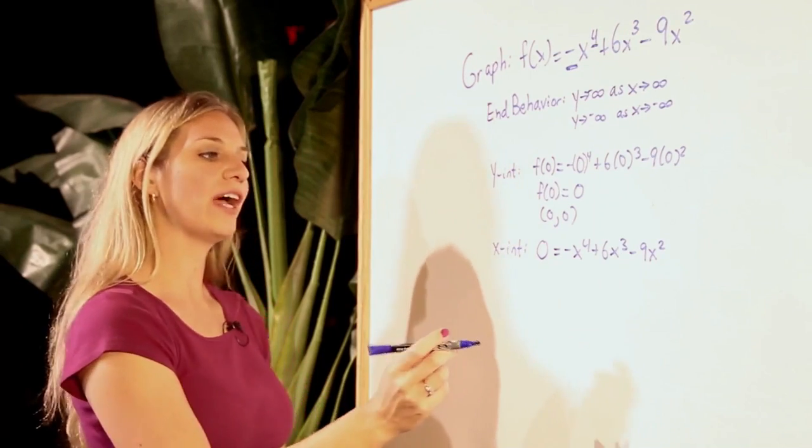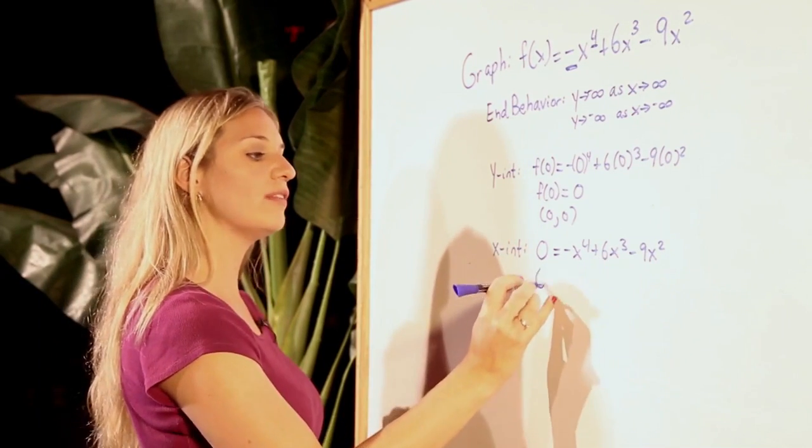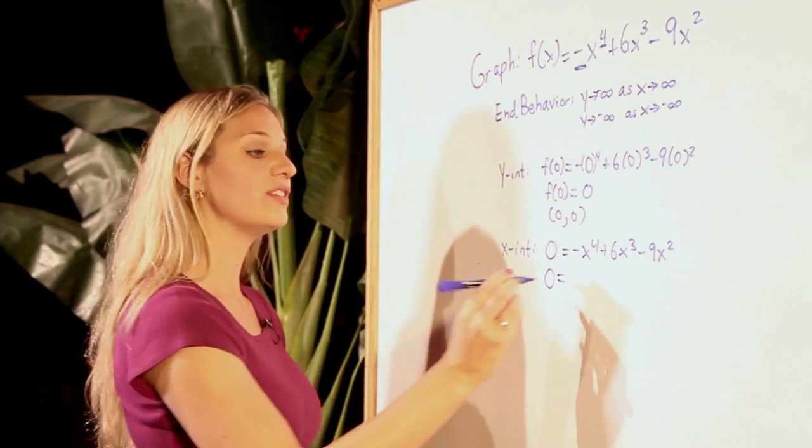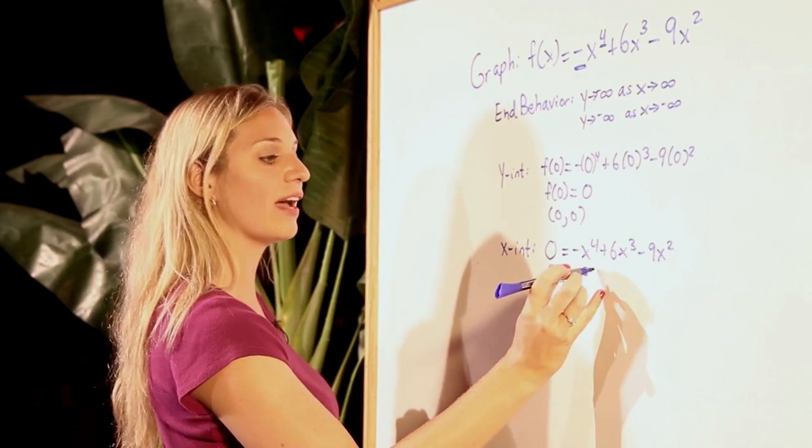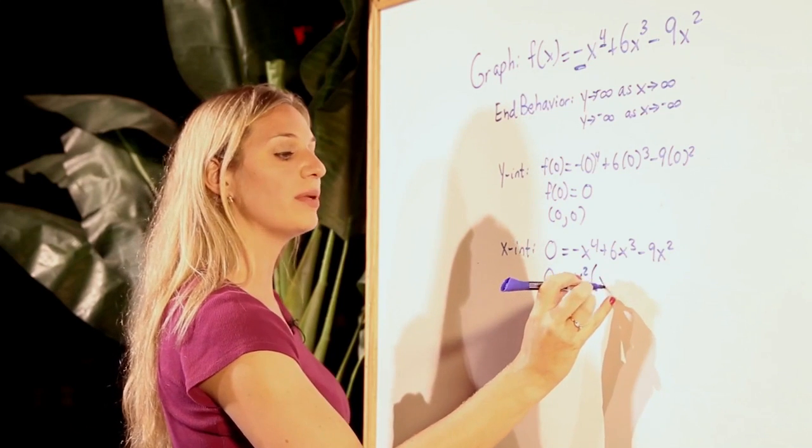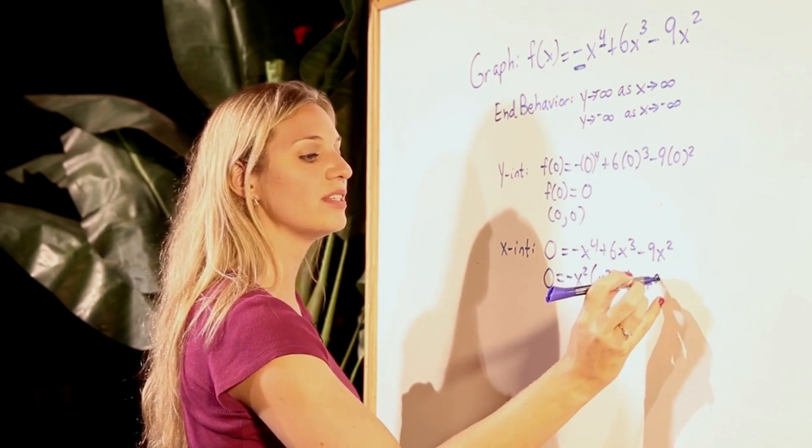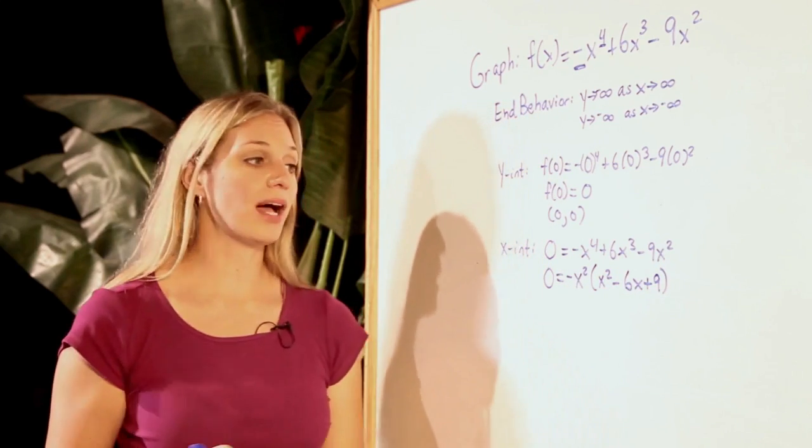Looking at our factoring here, we'll notice that all of these have in common an x-squared. Since the leading coefficient is negative, we will factor out a negative x-squared. Thus, we will be left with x-squared minus 6x plus 9 as our remaining polynomial.